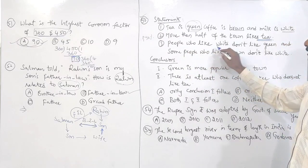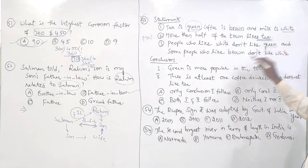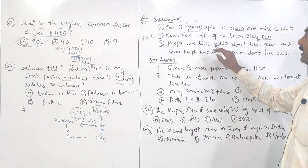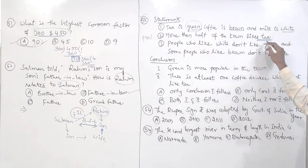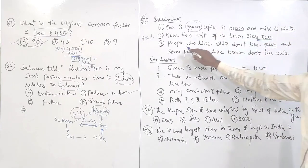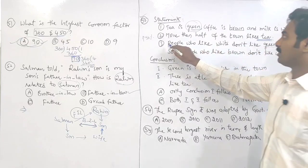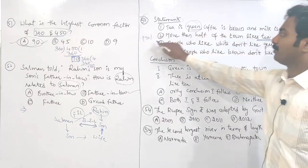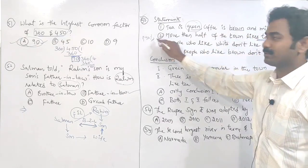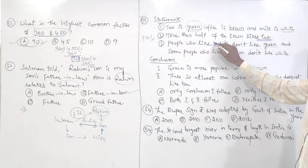That means people who like white don't like green — meaning they don't like tea. People who like white don't like green. So green is tea, which is more than 50%, meaning white is less than 50%.